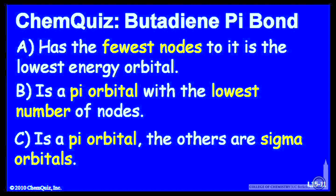Or C, C is a pi orbital, the others are sigma orbitals, so it must be the lowest energy orbital. Think about those for a minute and make a selection.